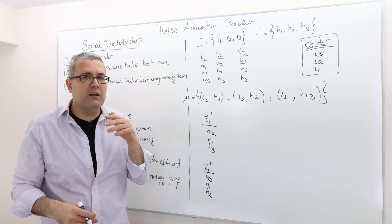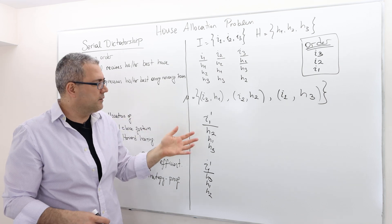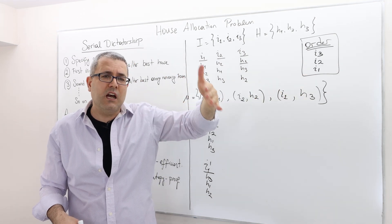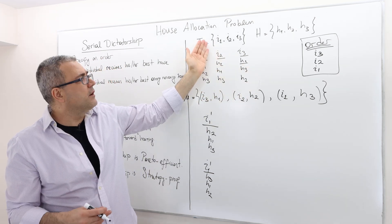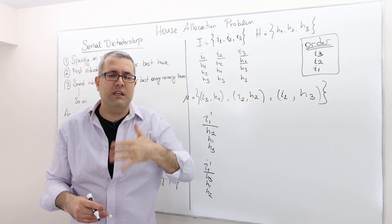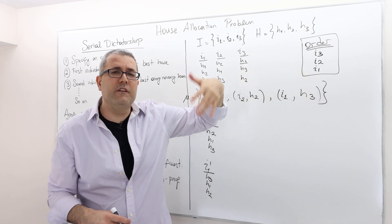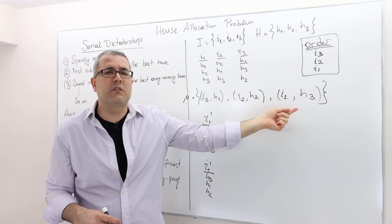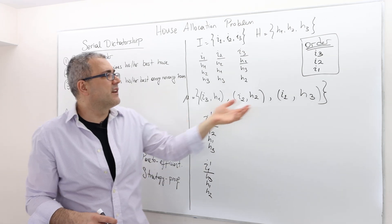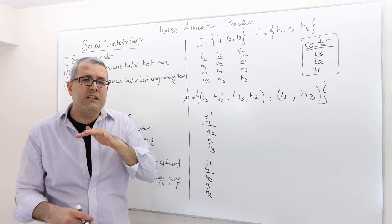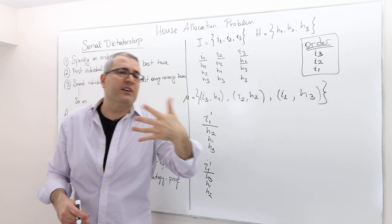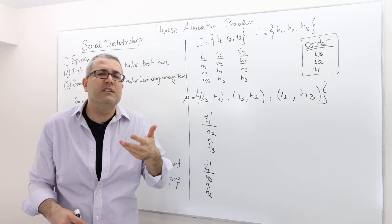Well, you may be thinking this is impossible. Why? Because individual one is the last guy who decides what to get. Given that player two and three declare their preferences this way, house one and house two are going to be gone before individual one's turn comes up. That means individual one will have only one option, which is house three. So regardless of what he declares, he's going to get house three. By lying, individual one has no option to change the matching outcome. Hence, telling the truth is a dominant strategy — or at least, lying is not a better strategy.